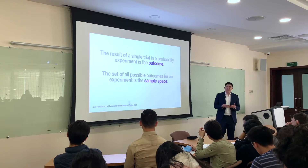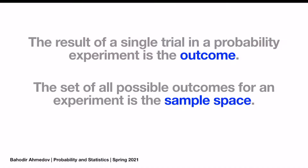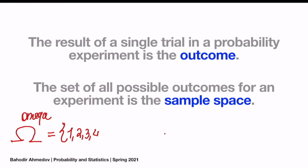If we put all of these outcomes together and create a set, this set is going to be called the sample space. We denote the sample space with the capital letter omega. Then we write down all possible outcomes of your probability experiment. If this is simply rolling a die, it is going to contain six outcomes: one, two, three, four, five, six.